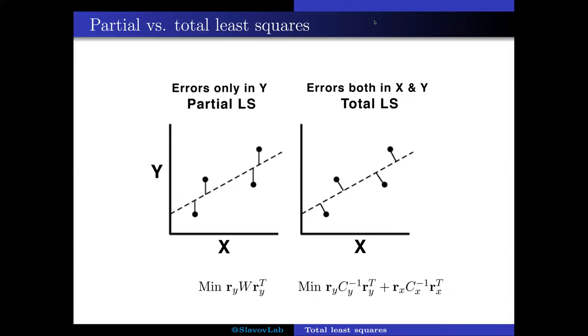In the case of the total least squares, as you might expect intuitively, we have a term both for the errors in Y and for the errors in the X direction.